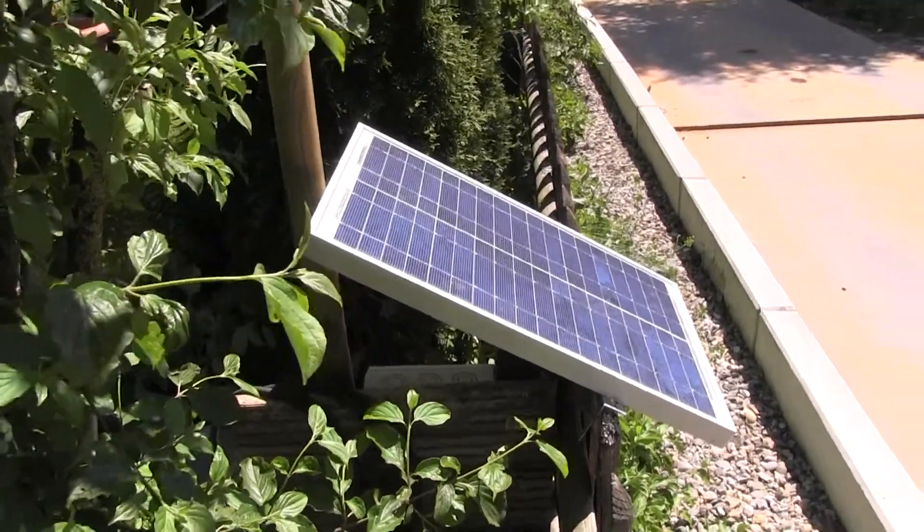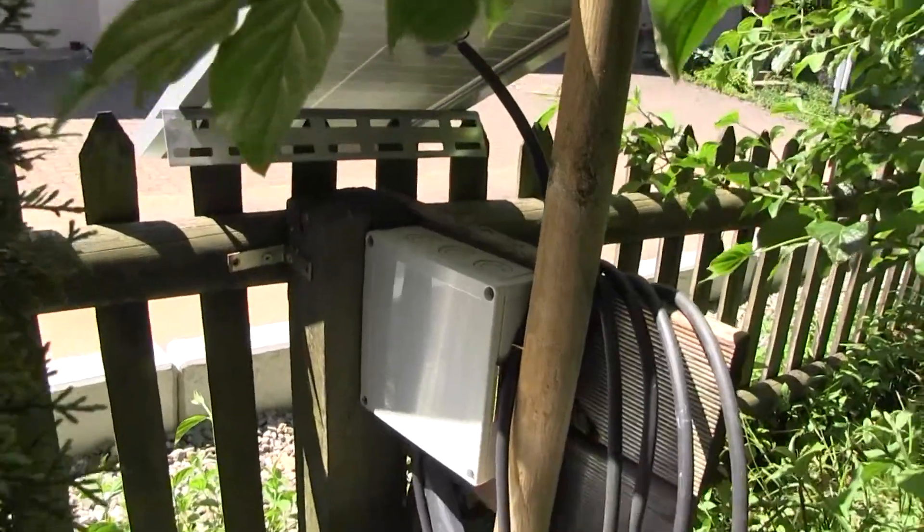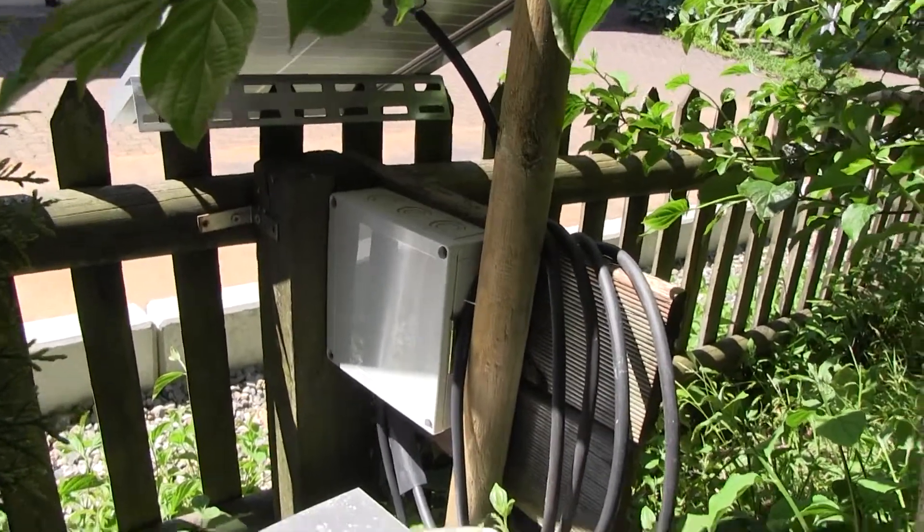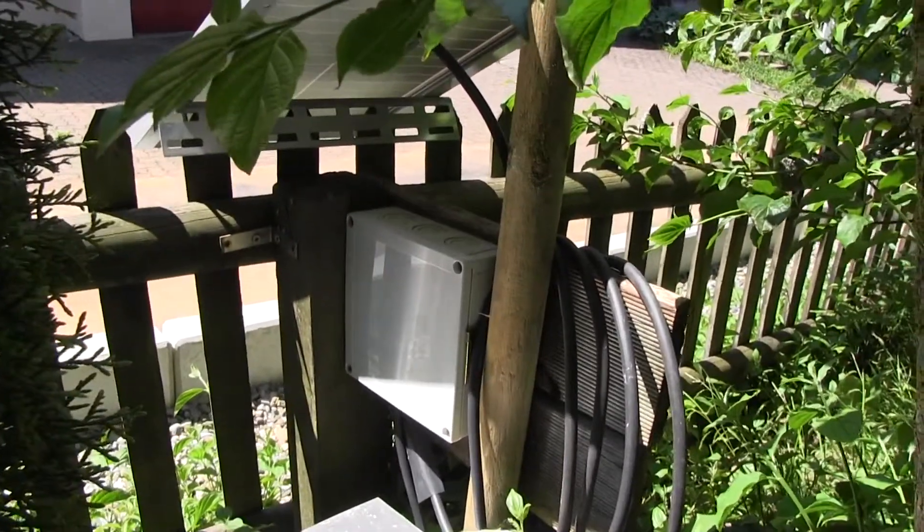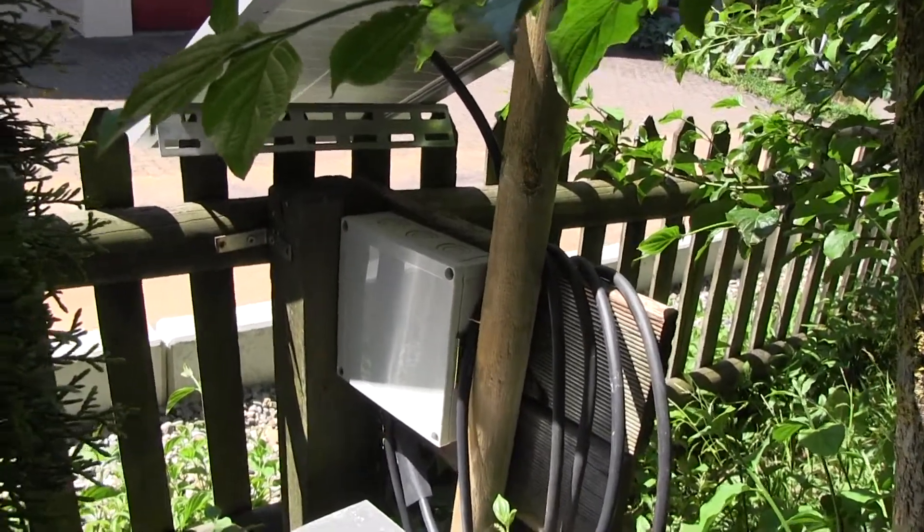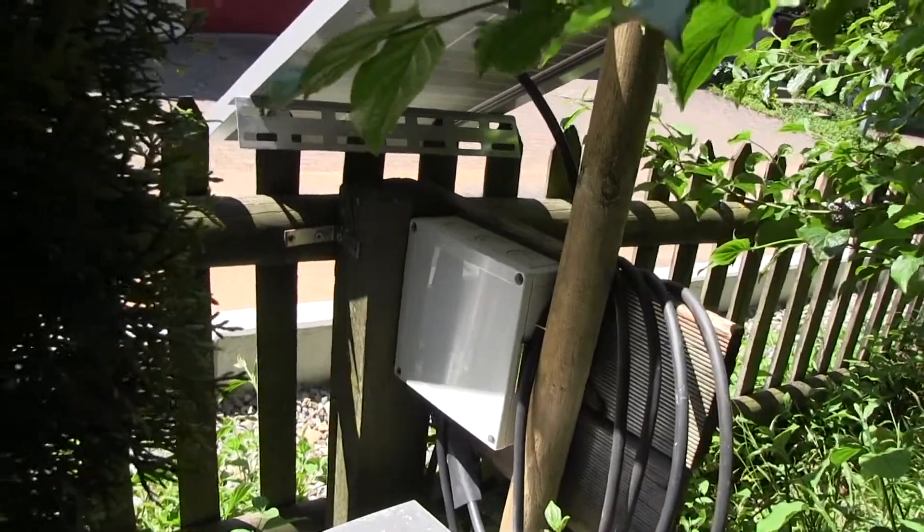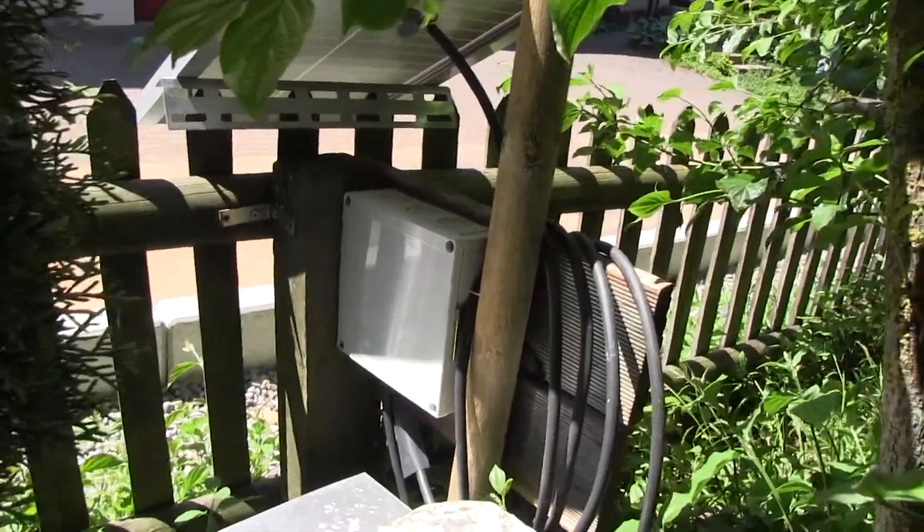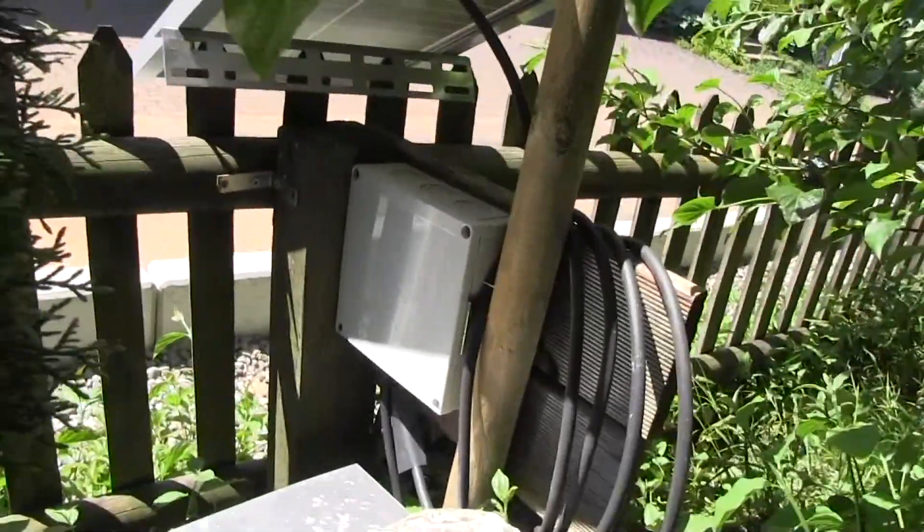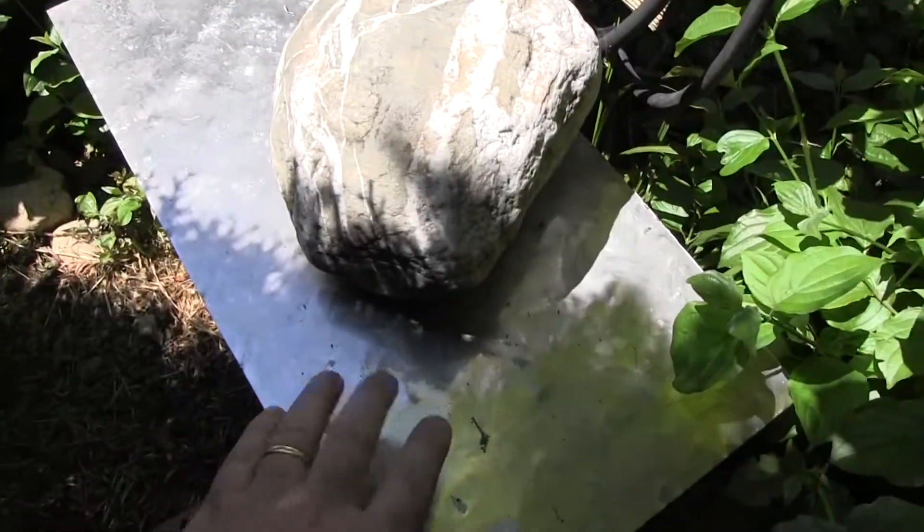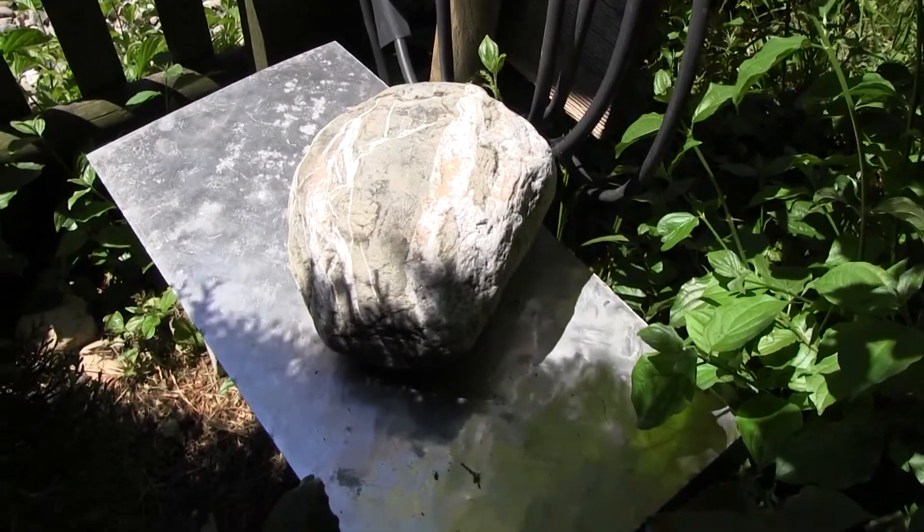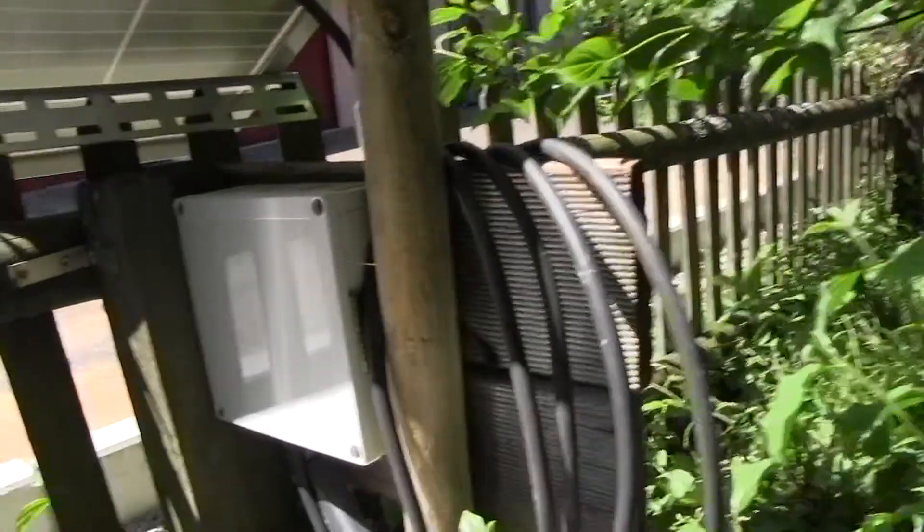Let me show how it's wired up. So the panel is feeding into a charge controller which is inside this box. It's an IP I think 68 box, I'm not sure. And everything is connected inside of this box, so the wiring is protected from rain, from moisture. And the battery is inside this box, it's a 7 amp hour battery.